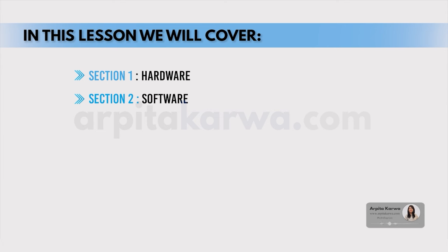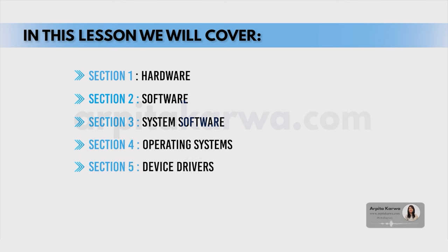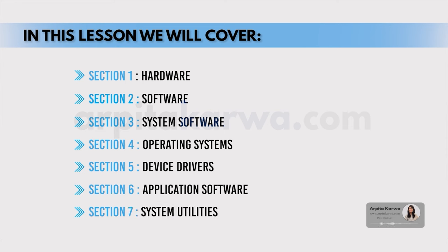In section 1, we shall cover hardware. Section 2, we shall cover software and its three types: system software, application software, and system utilities. In sections 3, 4, and 5, we shall cover system software further divided into two types — operating system and device drivers. Then in section 6, we will cover application software, and finally in section 7, we shall cover system utilities.